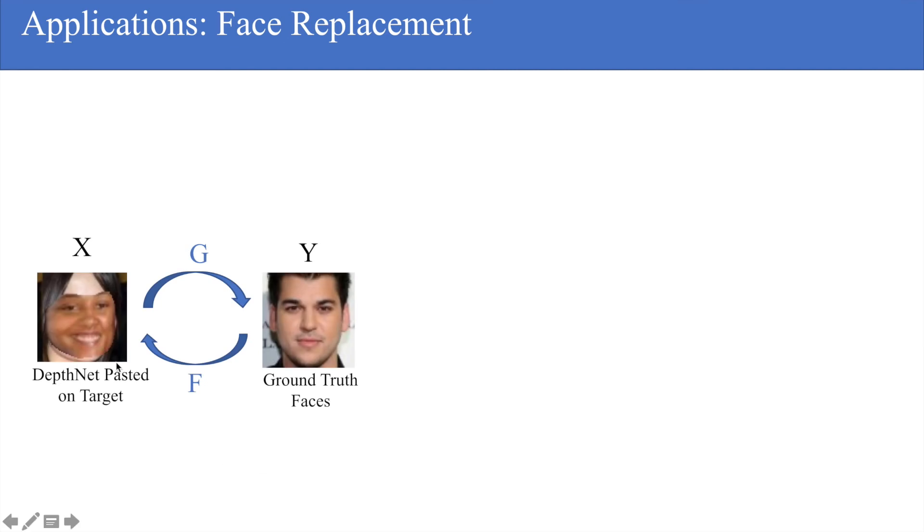Lastly, we show an application in face replacement. Here we're warping a source face onto a target face. What we're doing is pasting the warped source face onto the target image. We're learning CycleGAN to map to the domain of ground truth faces in the dataset.